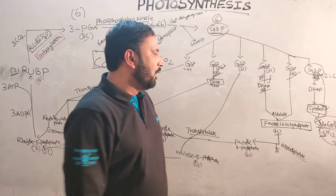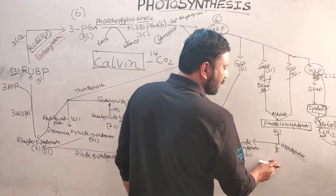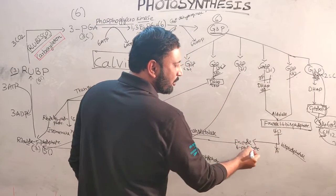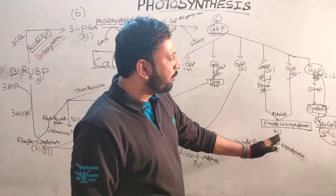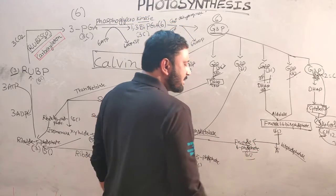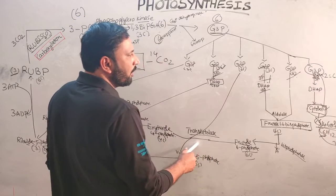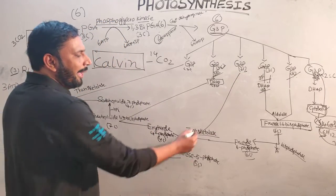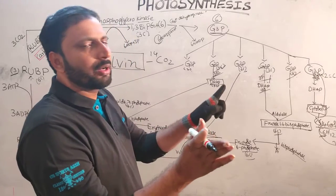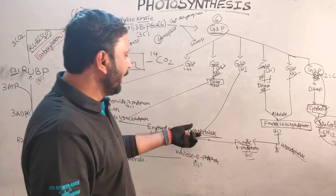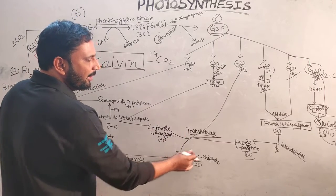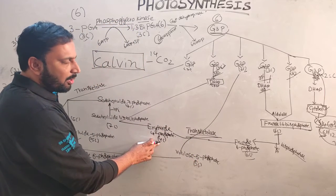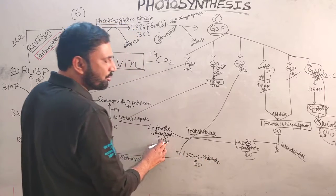Fructose-1,6-bisphosphate, a six-carbon compound, undergoes dephosphorylation by fructose-1,6-bisphosphatase to form fructose-6-phosphate, removing the first carbon phosphate. Fructose-6-phosphate (six carbons) then condenses with glyceraldehyde-3-phosphate (three carbons) in the presence of transketolase — since two products are formed. Six carbons plus three carbons equals nine carbons total, yielding a five-carbon compound and a four-carbon compound.